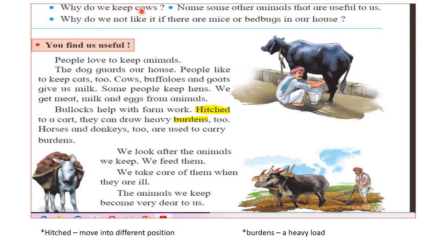Why do we keep cows? Because cows, buffaloes and goats give us milk. Other useful animals: the cat eats rats, and the dog guards our house. We do not like mice or bed bugs in our house — bed bugs suck our blood, and mice destroy our stored grains and nibble things. So we don't want these animals inside our house.